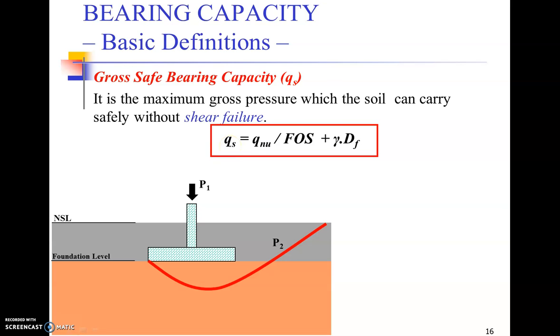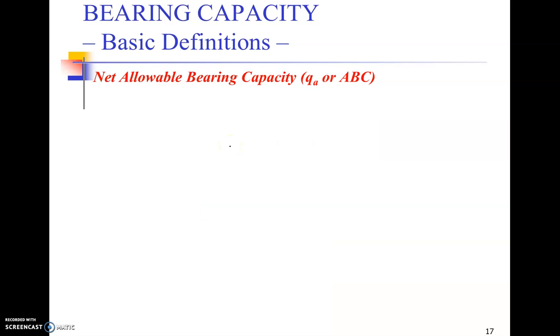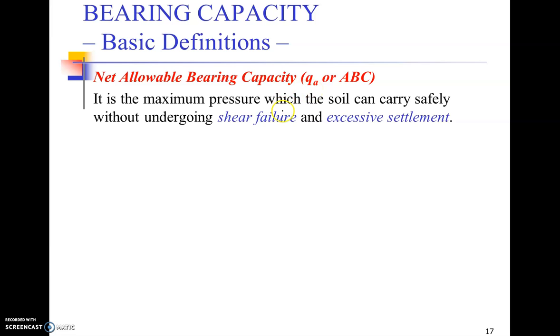The net allowable bearing capacity (ABC), allowable bearing capacity, is the maximum pressure which the soil can carry safely without undergoing shear failure and excessive settlement. So qa is used for the design of foundation. We generally come up to this level.